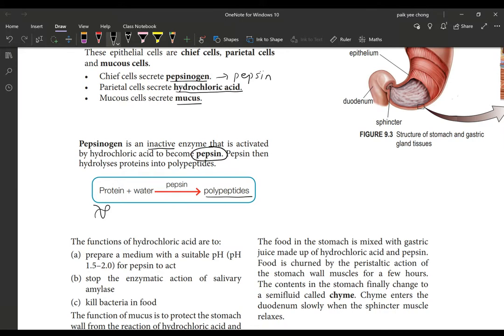Protein is highly folded, could be globules, very long chains. Polypeptides are also long but less complicated, shorter strands. You have protein breaking down to polypeptides, plus water because this is also hydrolysis with enzyme called pepsin.